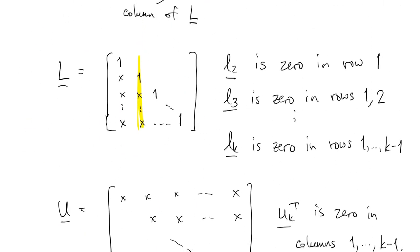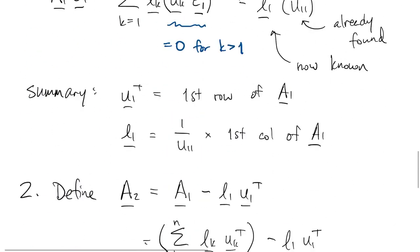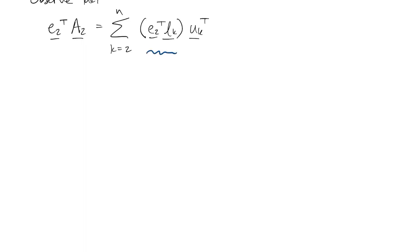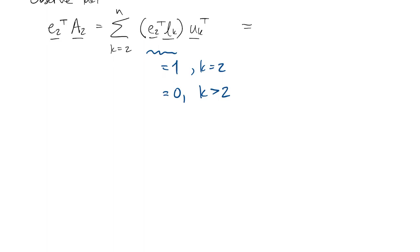Go back and think about the zero structure. Okay, there are only two columns of L that have non-zeros in row two. That's K equals one and K equals two. But, of course, we don't have K equals one in the sum anymore, and when K is equal to two, we get just one. So that means that the second row of A2 is the second row of U.